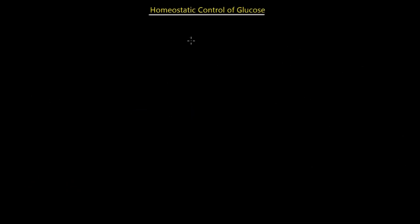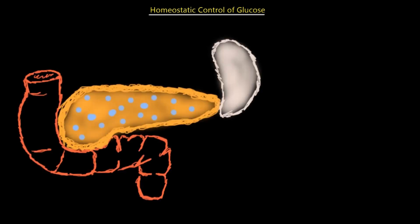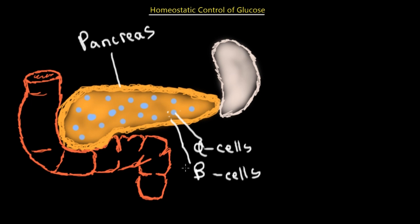Moving on, let's talk about the homeostatic control of glucose. Homeostasis of glucose is controlled using two hormones: glucagon and insulin. Before we discuss those hormones, we need to talk about the pancreas, because the pancreas — specifically its alpha cells and beta cells — are responsible for releasing these hormones. These cells can detect the levels of glucose in the blood as it passes through the pancreas, making them the receptors and control mechanisms.